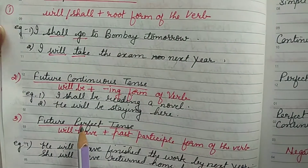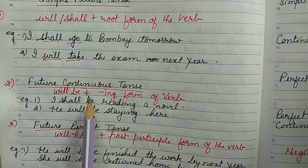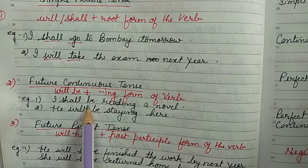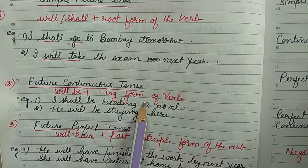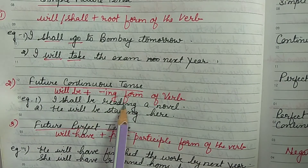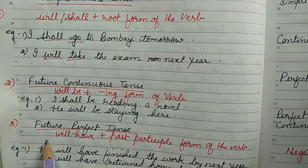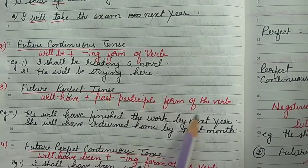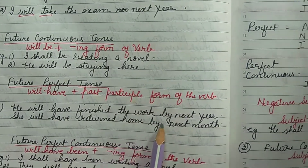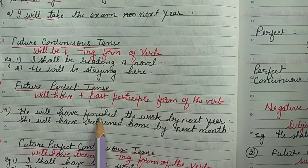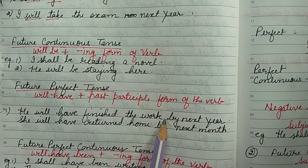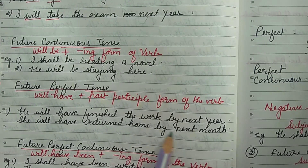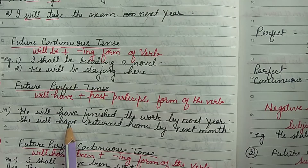The future continuous tense uses the structure: will/shall + be + ing form of the verb. For example: 'I shall be reading a novel'; 'He will be staying here.' The future perfect tense uses the structure: will/shall + have + past participle (V3) of the verb. For example: 'He will have finished the work by next year'; 'She will have returned home by next month.'